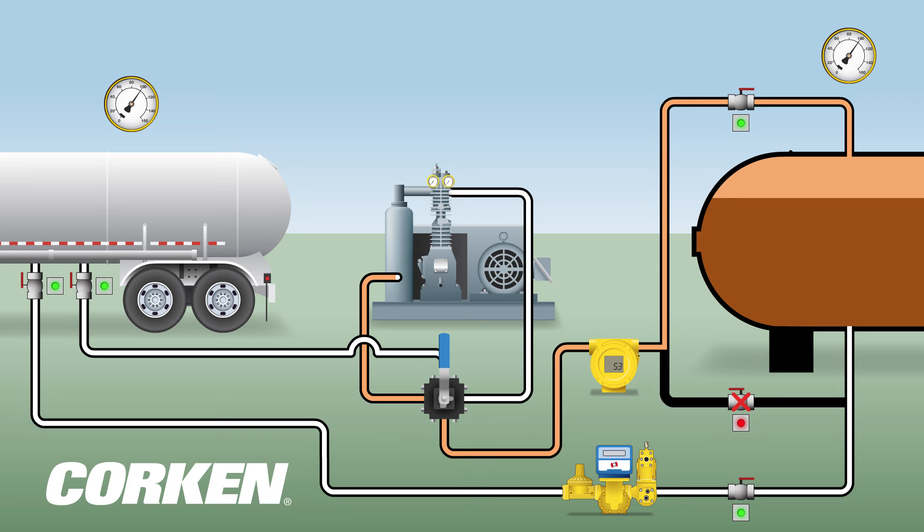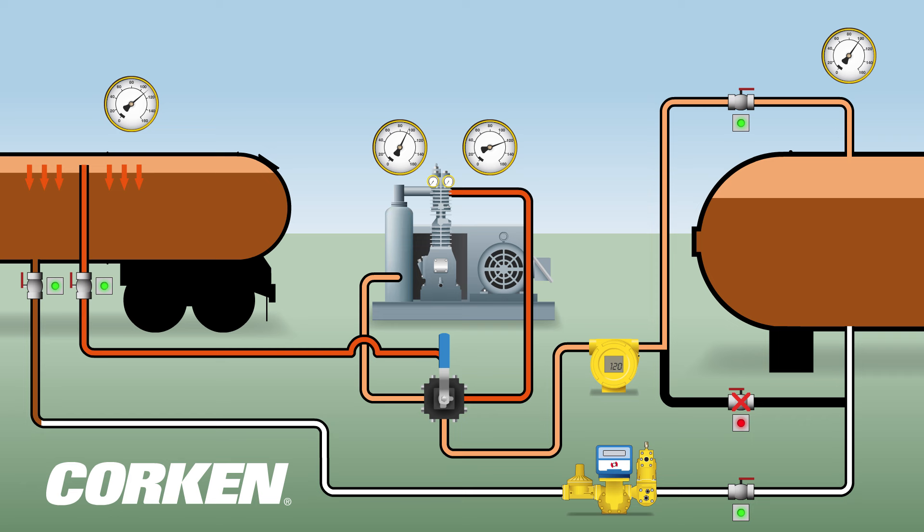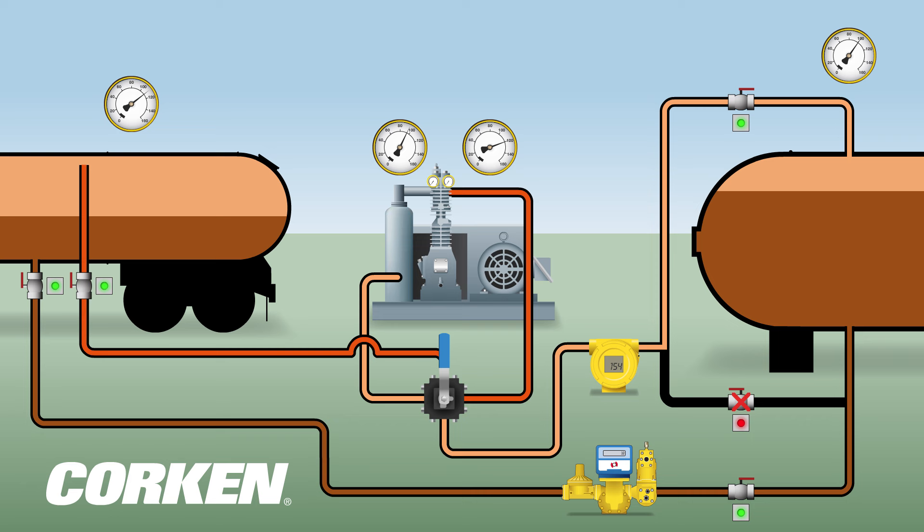The compressor compresses the vapor and increases the vapor pressure as it is pushed into the bottom of the storage tank. As the differential pressure between the two tanks increases, the liquefied gas begins to flow from the transport to the storage tank.